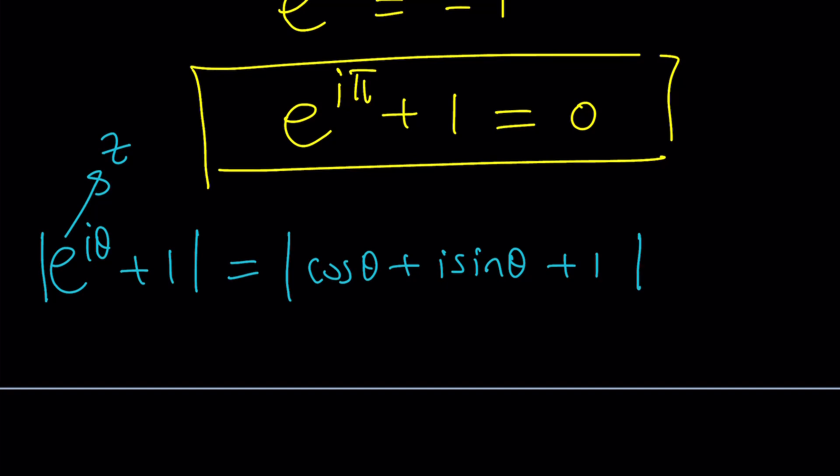Isn't the absolute value of this one again? No. Be careful. Even though you kind of have this expression all inside the absolute value, we still have to find the answer in terms of theta. Again, if you didn't have the one, it will be one because cosine squared plus sine squared equals one.